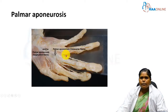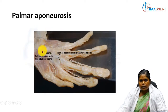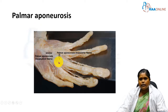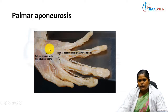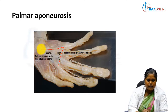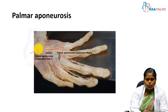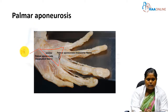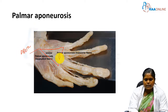Here we can see the palmar aponeurosis in a dissected specimen. After removing the skin and superficial fat, we can see the deep fascia — this is the triangular palmar aponeurosis. The base, sides, and apex can be appreciated: the apex is at the wrist and the base is at the root of the fingers.